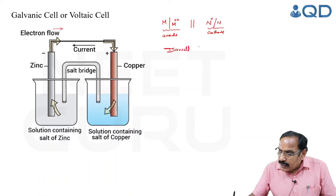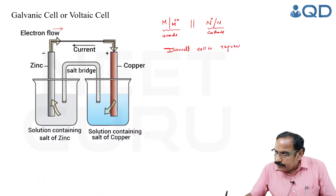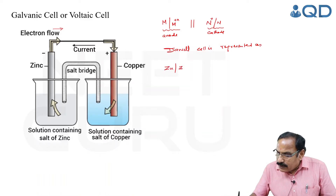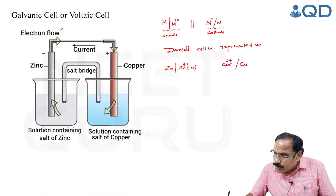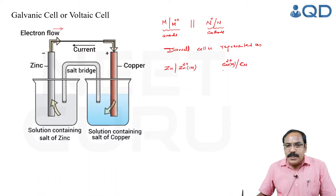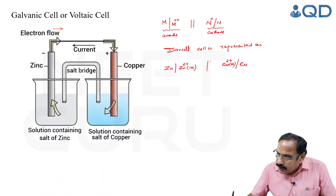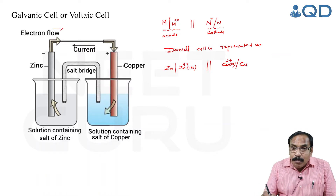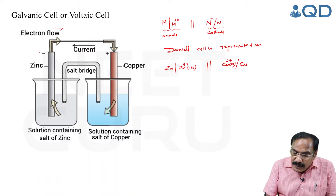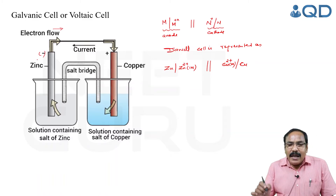Thus, the Daniel cell is represented as: zinc in contact with one molar zinc sulfate solution as the anodic compartment, while a copper rod dipped in one molar copper sulfate solution is the cathodic compartment, and they are connected through a salt bridge.